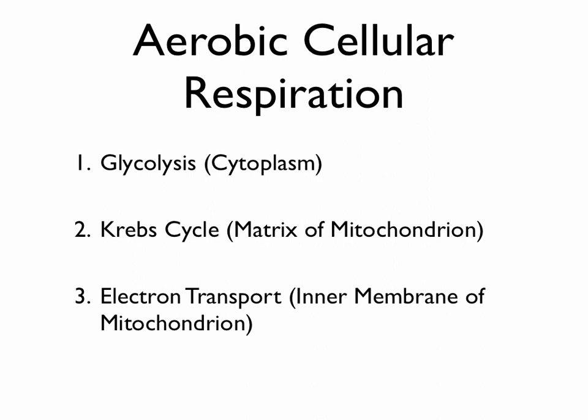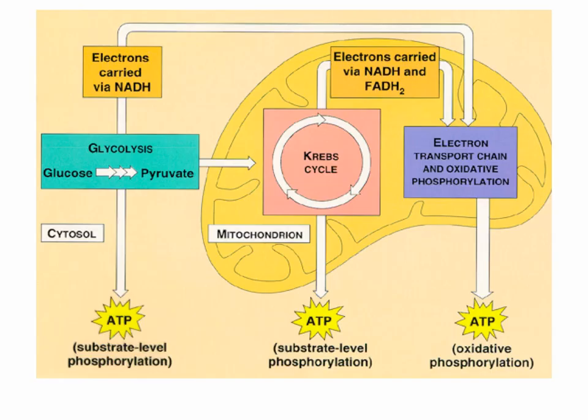This is what it would look like in a diagram. Notice that glycolysis — shown in teal on the left — happens outside of the mitochondria. It releases some ATP, but more importantly it gives us the raw materials for the two other parts of respiration that happen inside the mitochondria. The Krebs cycle happens in the matrix, and the electron transport chain happens in the inner membrane.